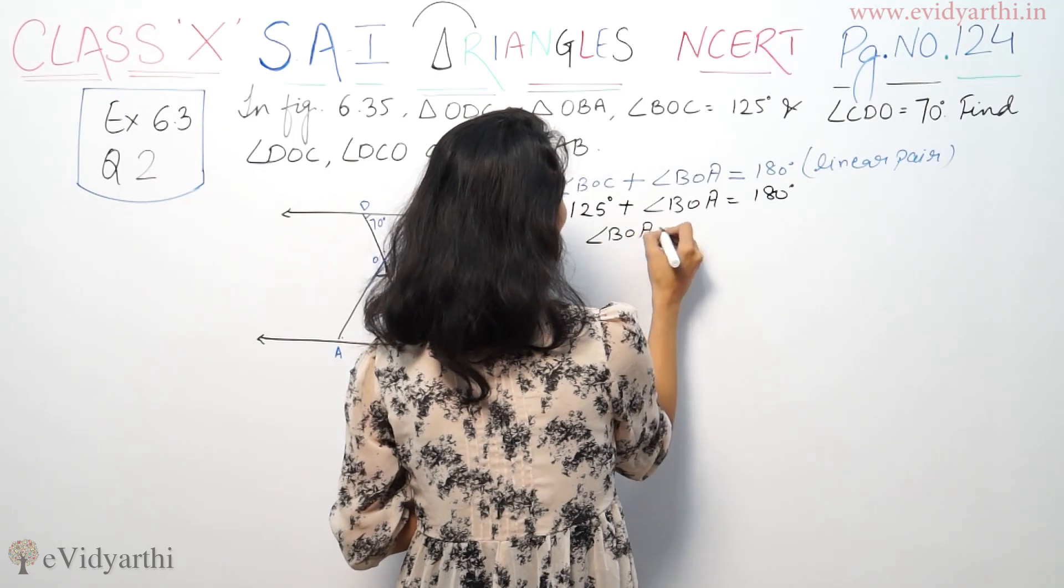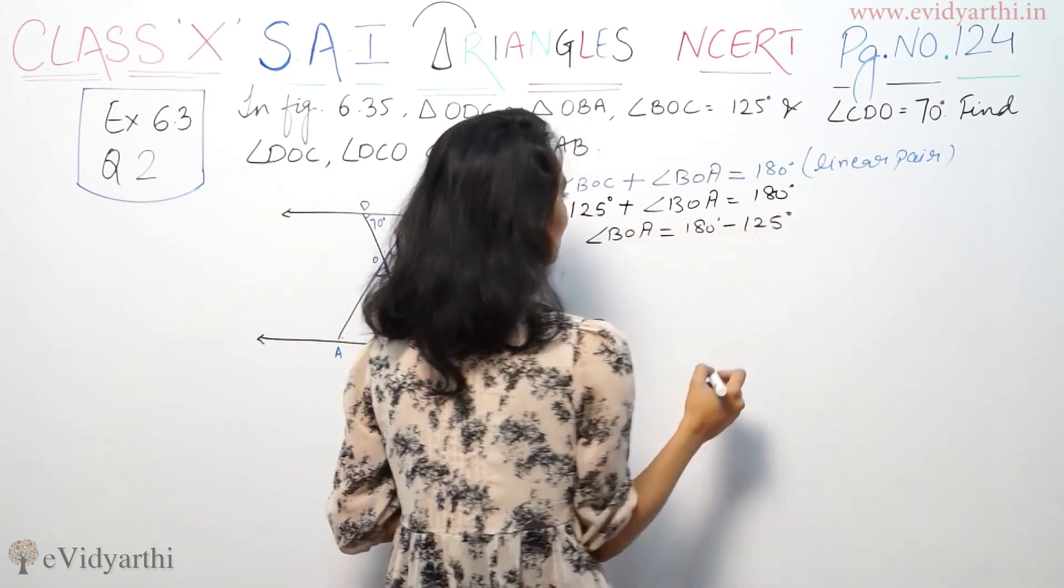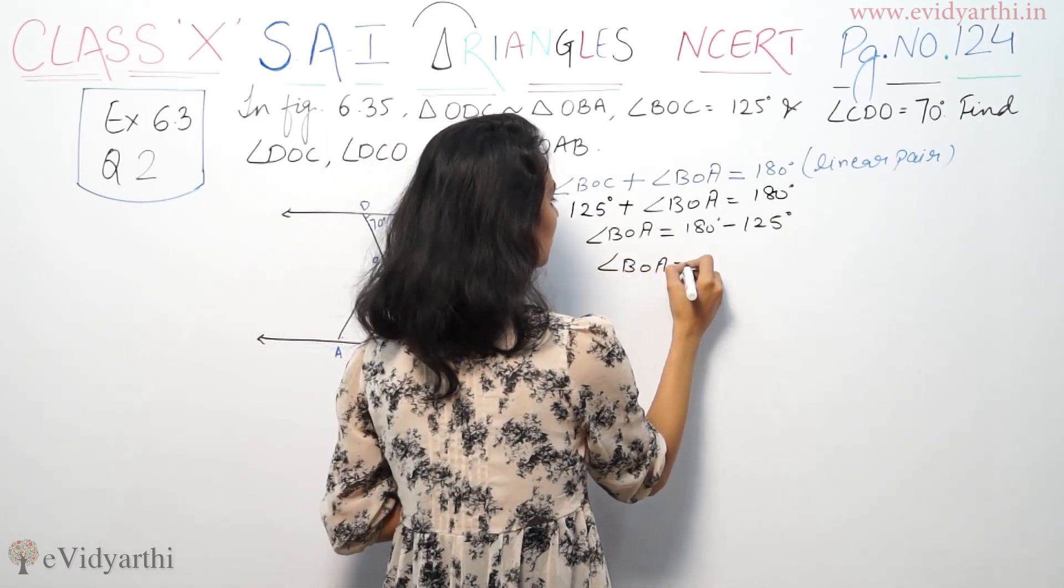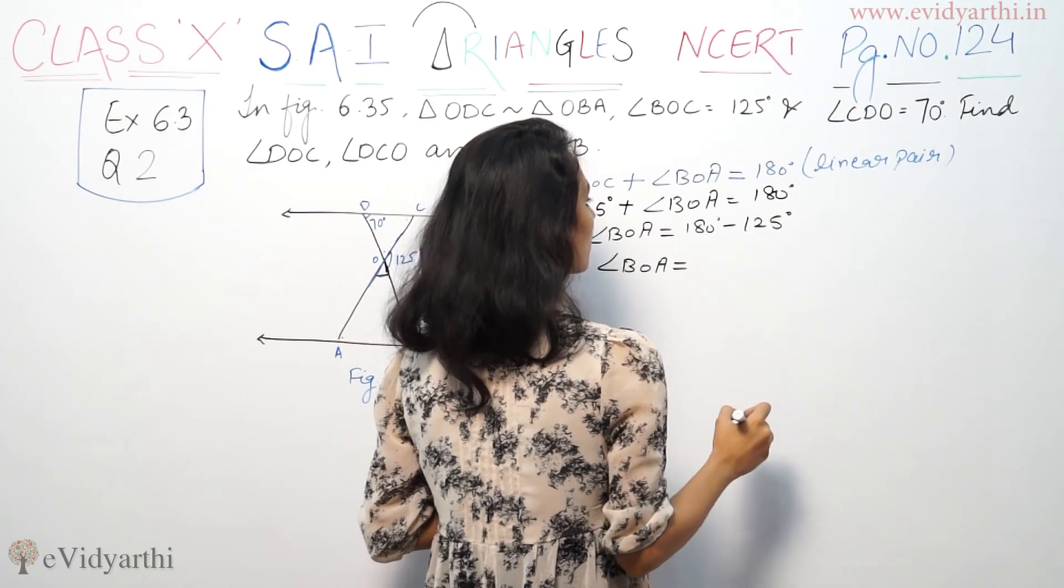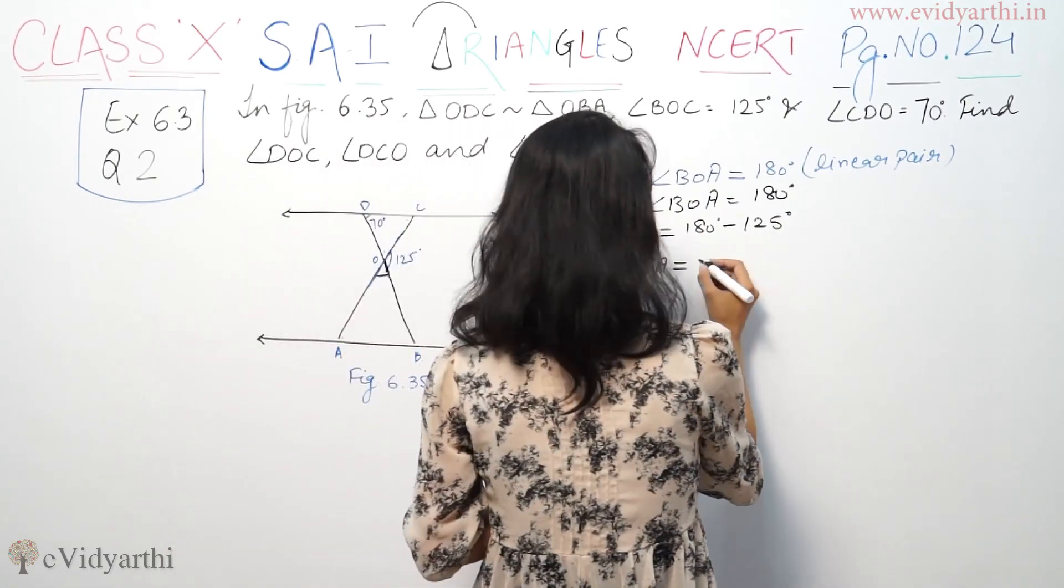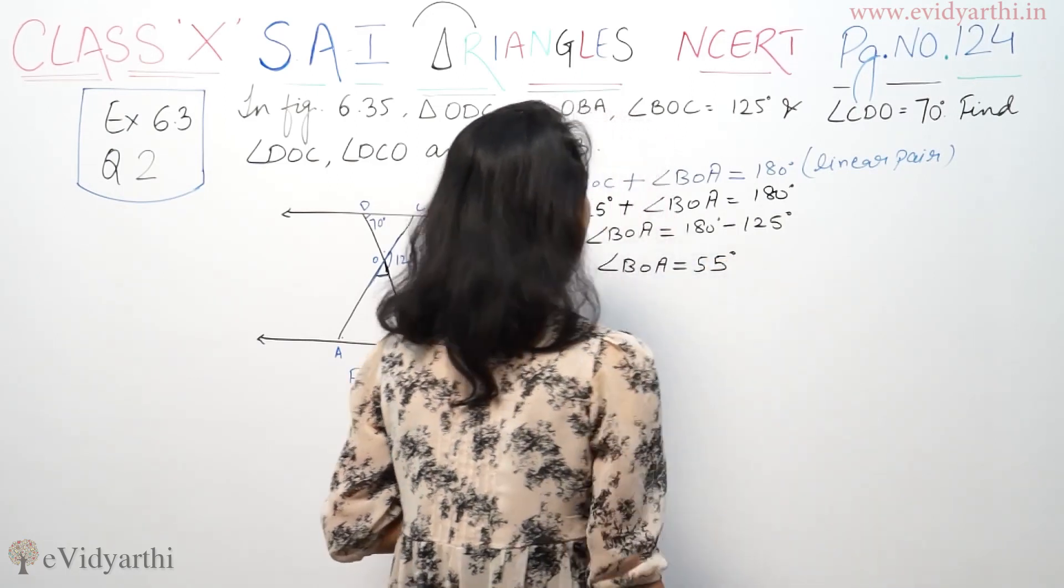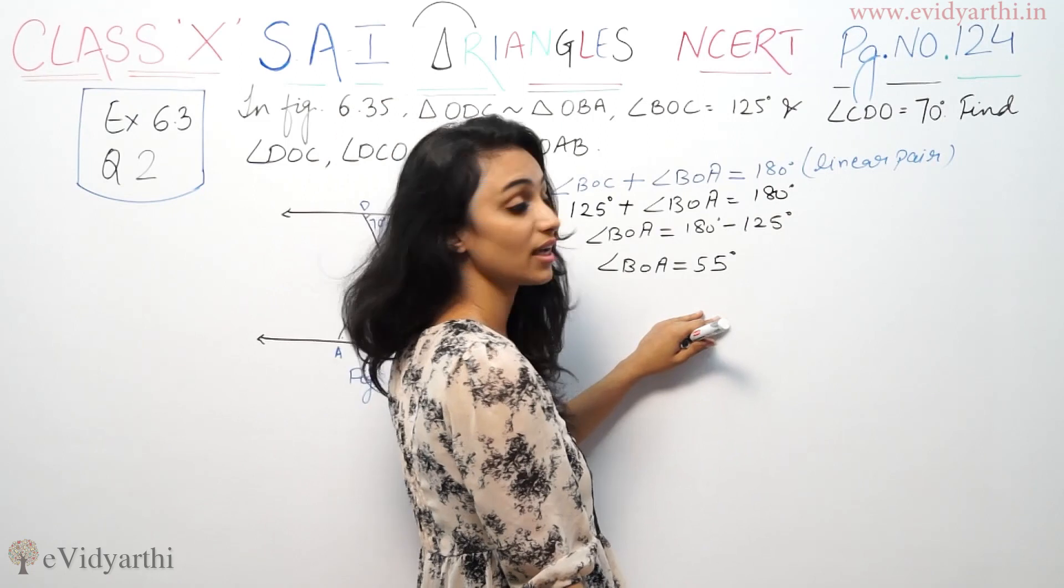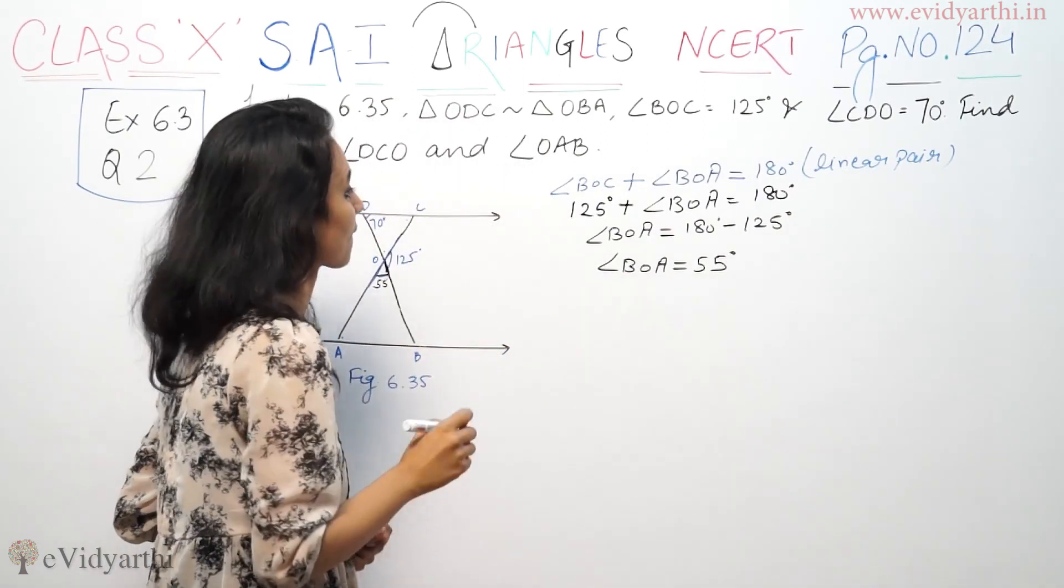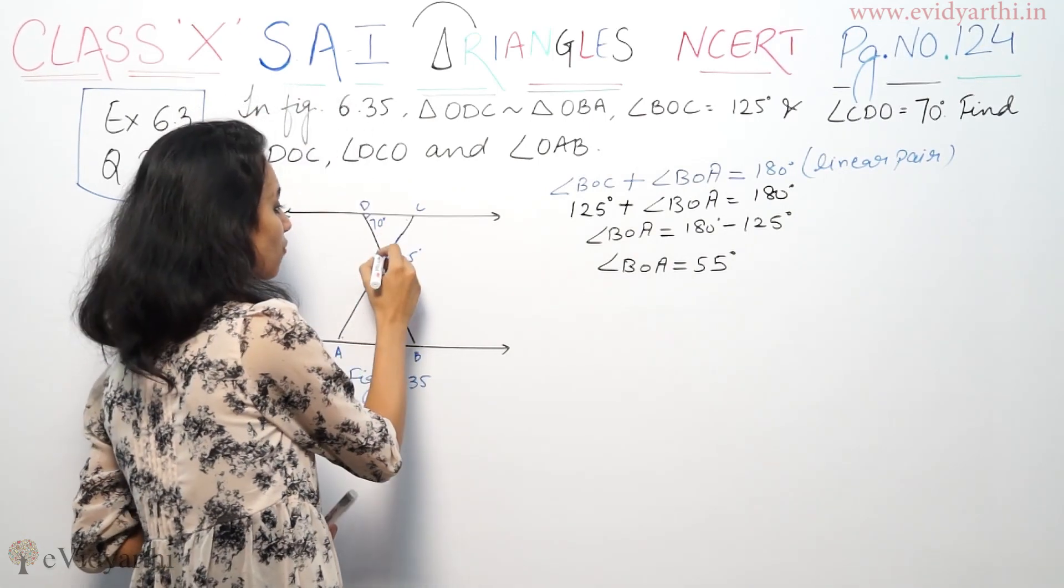BOA is equal to 180 degrees minus 125 degrees. So, DOA value is 55 degrees. Now, this is 55 degrees. Again, this is 55 degrees.